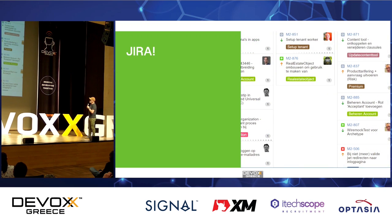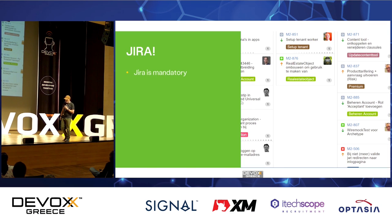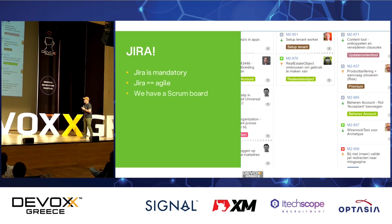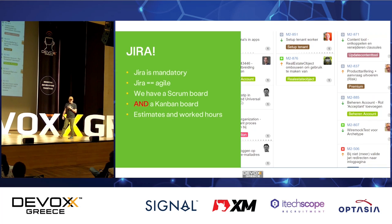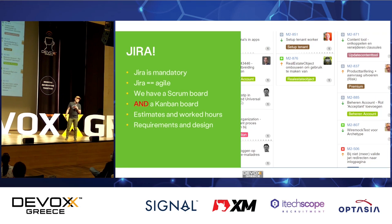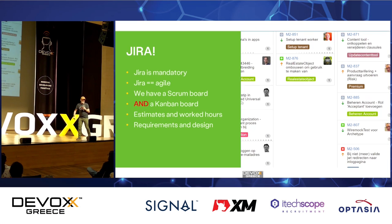JIRA is mandatory — JIRA means agile. If you do JIRA, you're agile. You should have both a Scrum board and a Kanban board in JIRA — they look pretty much the same to me. People put all their estimates, hours worked, requirements, and whole designs into JIRA as well. That means once you finish a ticket, you can never find back what the design decisions were that you made. So yes, let's put everything in JIRA.